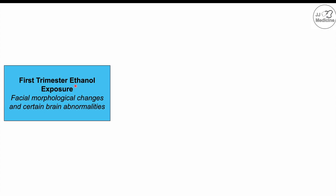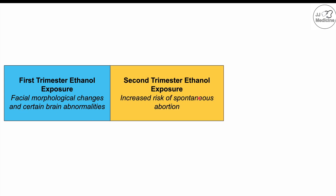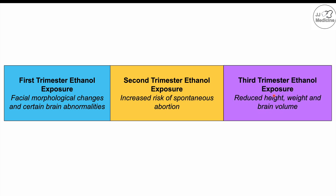The effects of ethanol exposure vary by trimester. In the first trimester, exposure is most commonly associated with facial morphological changes and brain abnormalities. In the second trimester, it increases the risk of spontaneous abortion. In the third trimester, it is more likely to cause reduced height and weight and reduced brain volume.